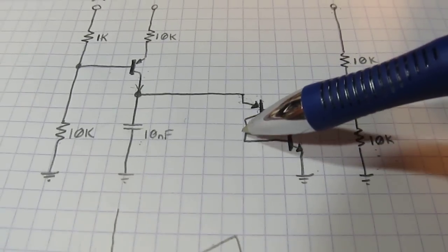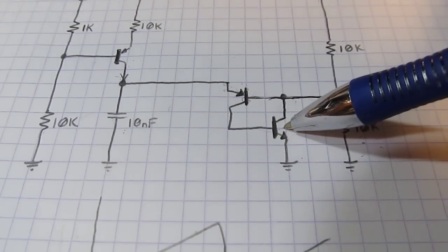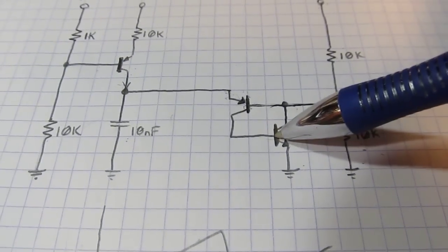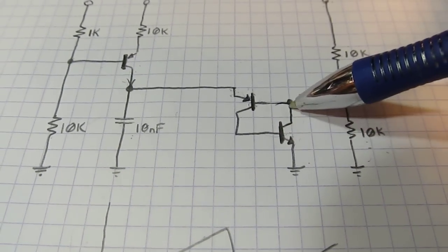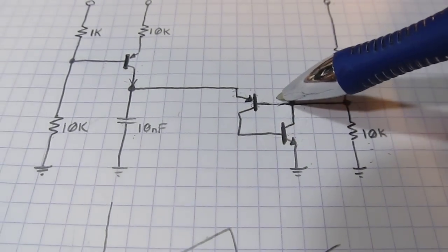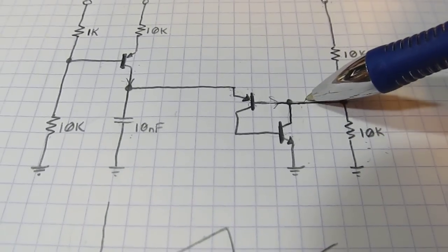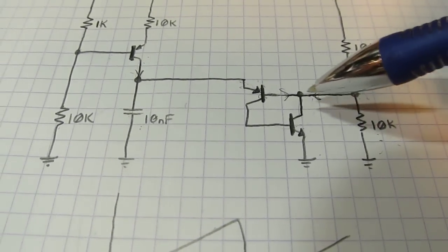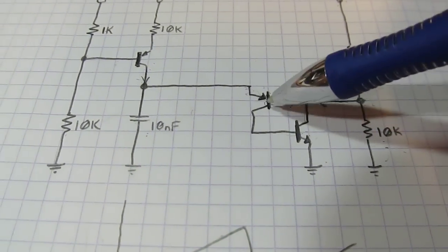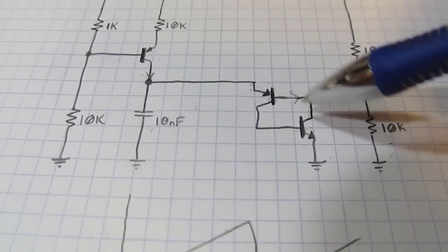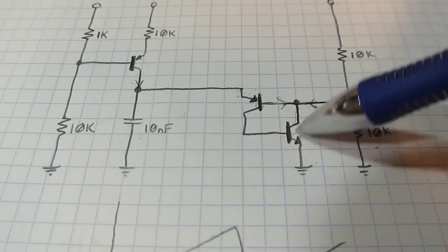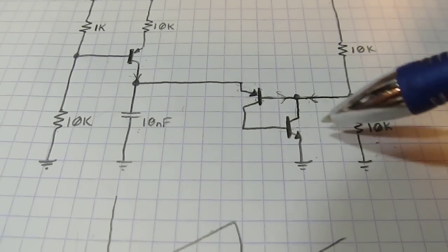So its collector current then becomes base current for this NPN, turning it on. Once it turns on, then its collector current starts pulling current both from the base and out of here. And by pulling the current out of the base, we're actually turning this transistor on harder. And that basically just reinforces both these transistors being turned on.